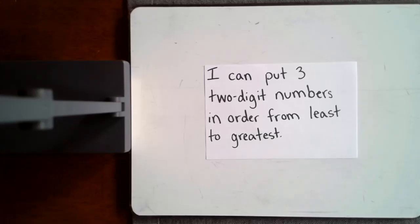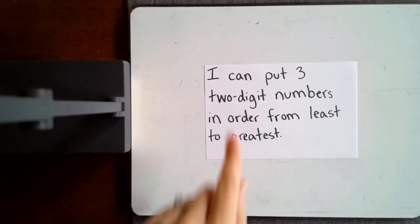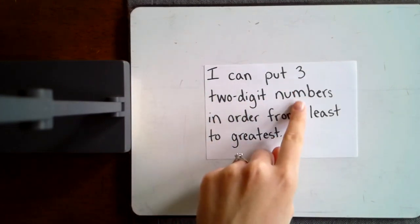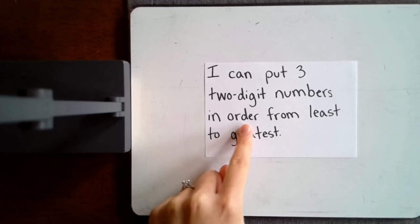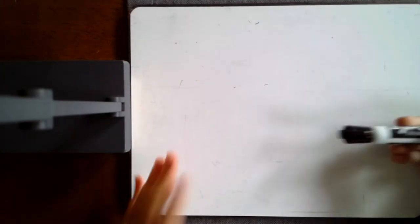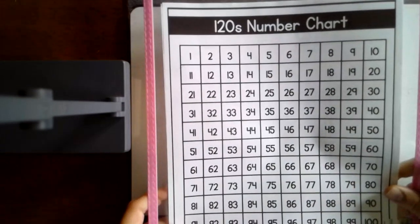Hello first graders. Today we are learning how I can put three two-digit numbers in order from least to greatest. I'll be using a few tools today. I have a whiteboard and a marker. You could use paper and pencil at home. I also am going to be using my 120 number chart.